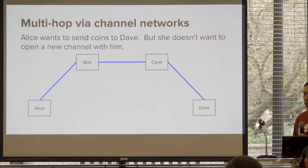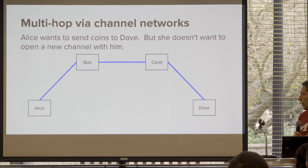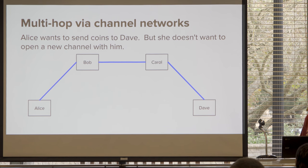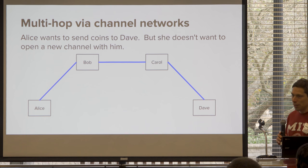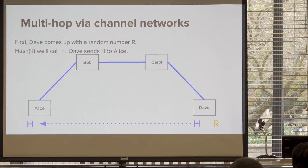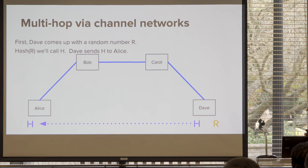The better trustless way is this: Dave comes up with a random number — about 32 bytes — and takes the hash of it with SHA-256, producing H, and sends that hash to Alice. Alice and Dave are not connected on the channel network, but they have a regular TCP/IP connection that's authenticated and encrypted, so they can talk. So Alice says hey Dave, I want to send you a coin. Dave says great, send me one. Alice says, give me H first. Dave creates R and sends Alice H.